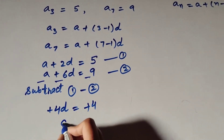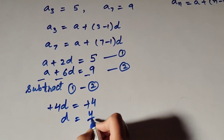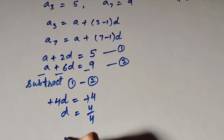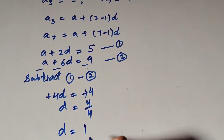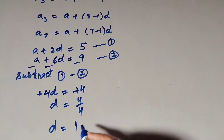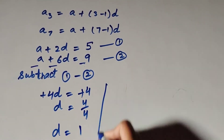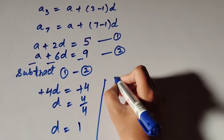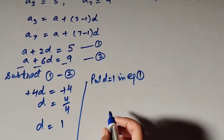The negatives cancel out, and d equals 4 divided by 4, which equals 1. So d is equal to 1. Now we find the value of a by putting the value d equals 1 into equation number 1.